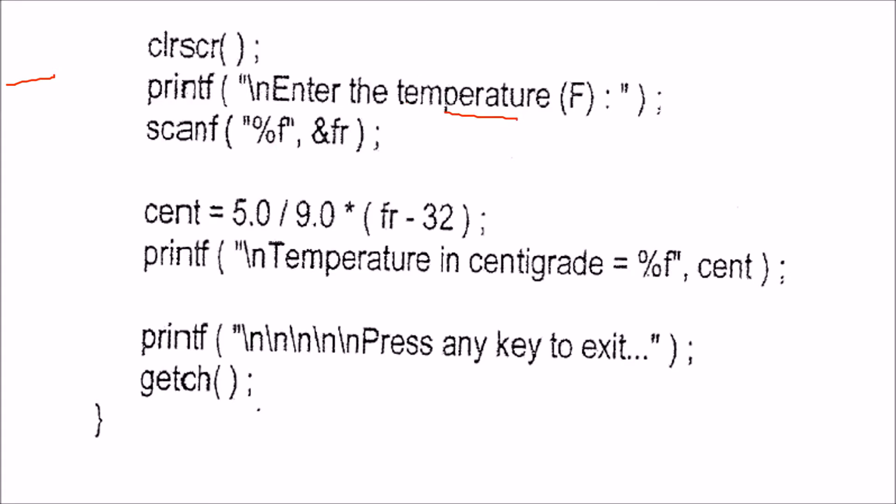This will be taken in ampersand fr. So fr will be the location. Ampersand shows the address. So fr is the location where the temperature in Fahrenheit will be stored. And that will be a decimal value.